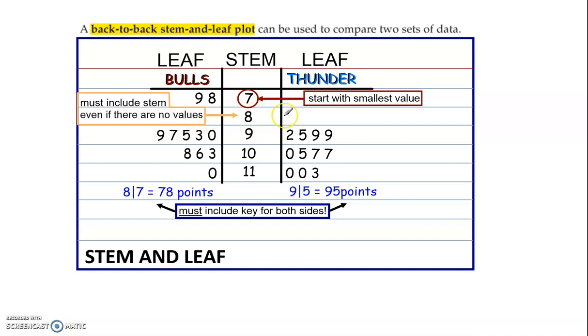Even if there are no values, you must include the stem. So neither team had any game where they finished in the 80s. Okay, but you have to have the 8 in there. You can't just skip over and go straight to the 9. All right, and then the key has to be there in a back-to-back for both sides.